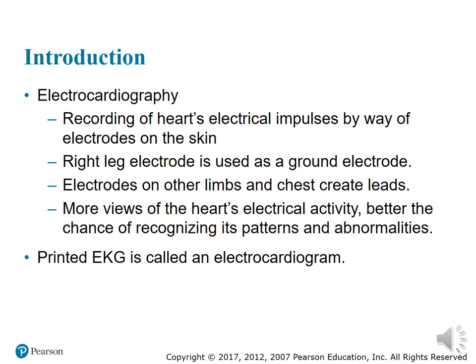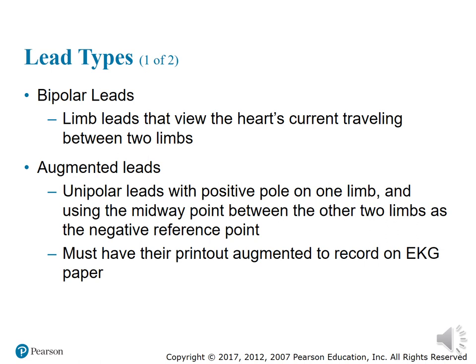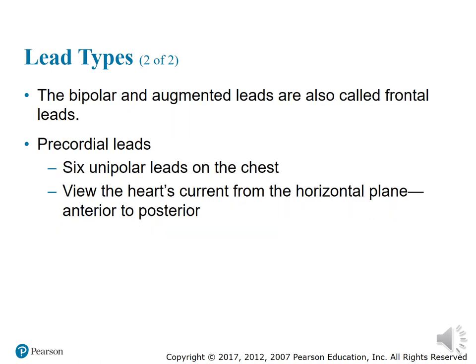When we print out the EKG or ECG, the printout is called an electrocardiogram. Each lead — there are three different types of leads that make up an EKG: we have bipolar leads, augmented leads, and precordial leads, or chest leads. Sometimes you'll hear them referred to as horizontal plane leads, because the chest leads take the horizontal view of the electrical activity of what the heart is doing at that particular time.